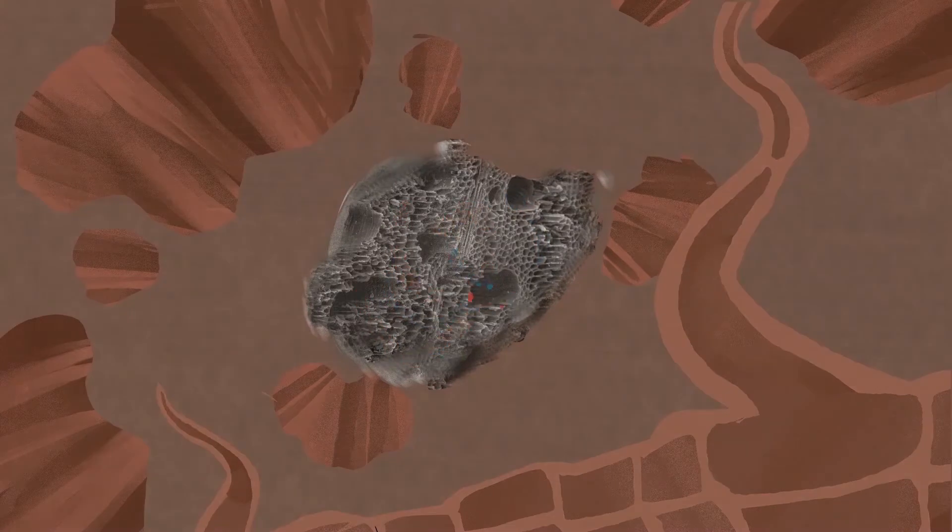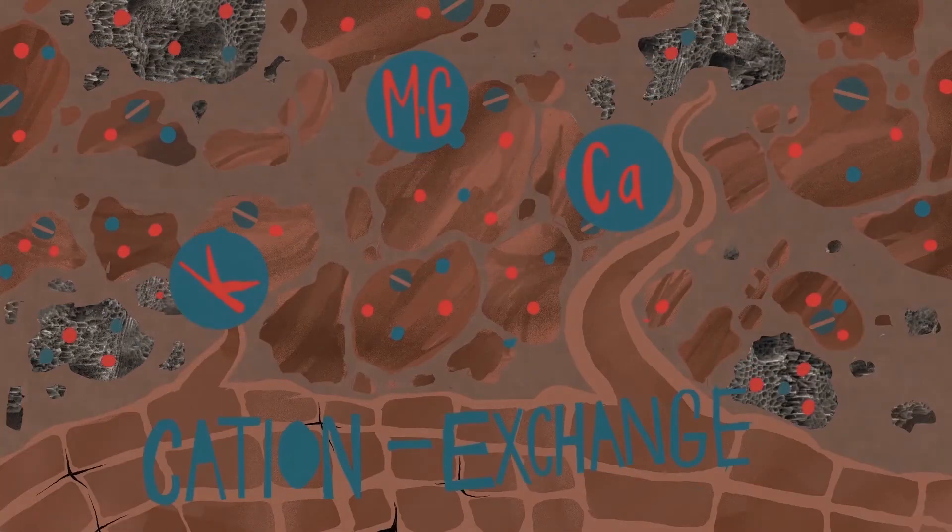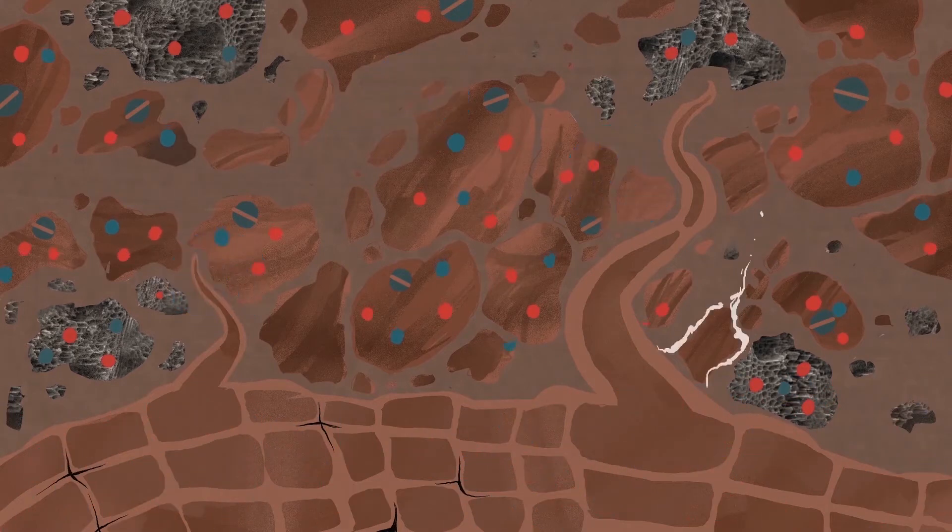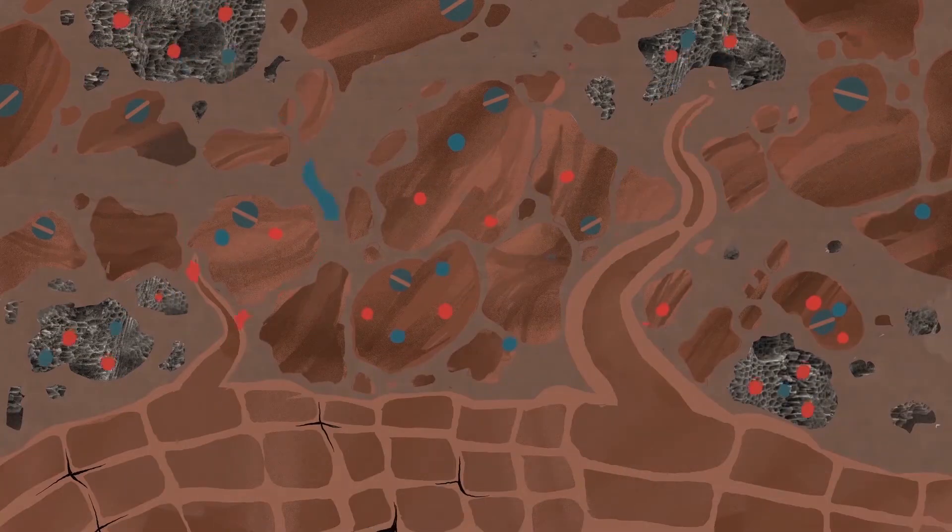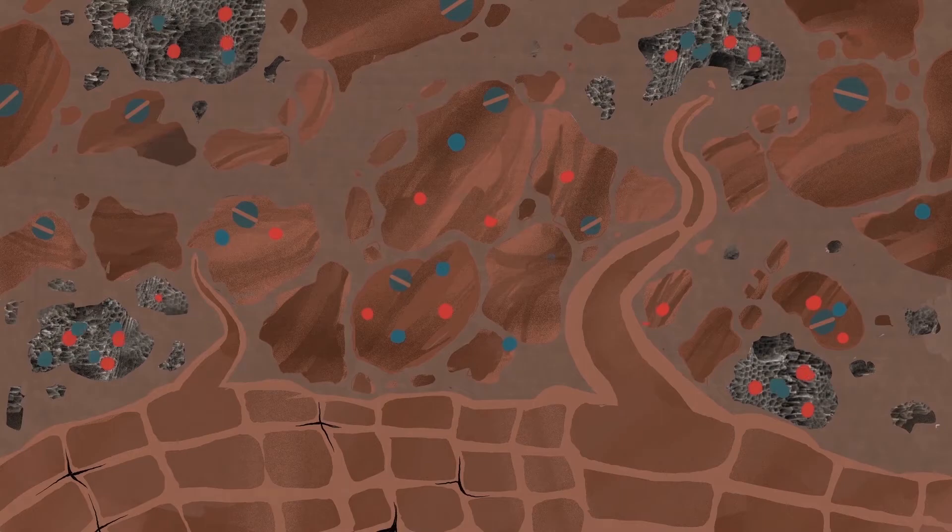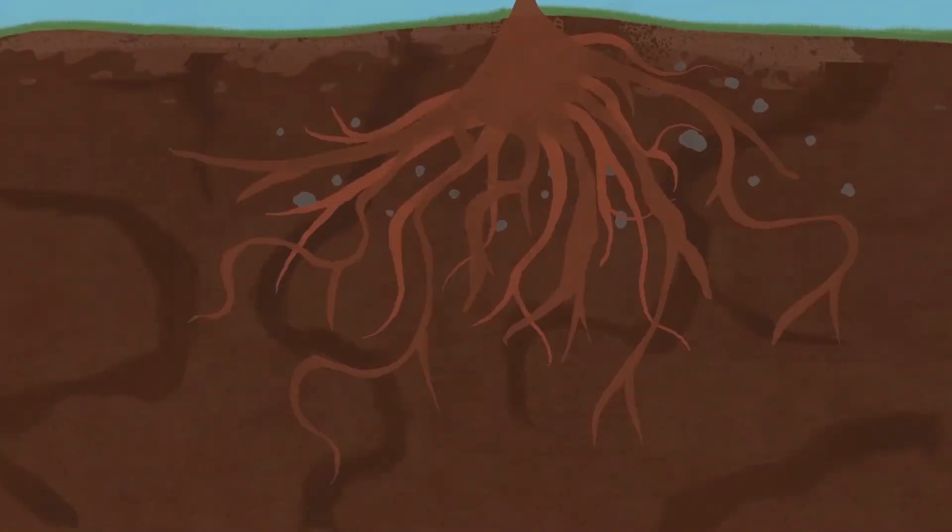Biochar is very high in carbon, which is good for a process called cation exchange, which essentially means more nutrients are retained in the soil and available for plant roots.